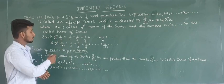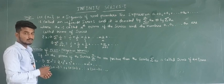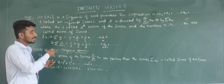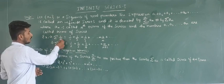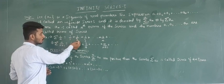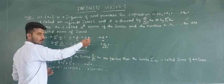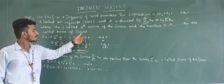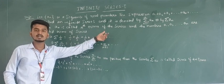For the series 1/n, if we substitute n = 1, 2, 3, and so on, we get the series as 1/1 + 1/2 + 1/3 + ... + 1/n + ... and so on.